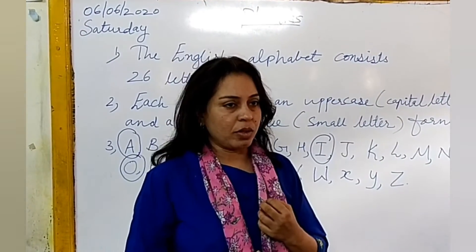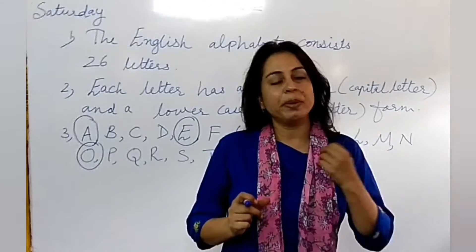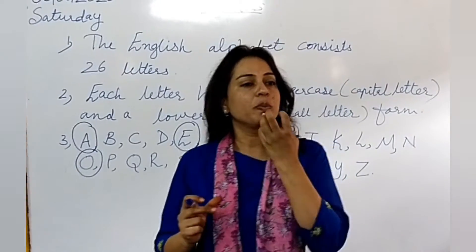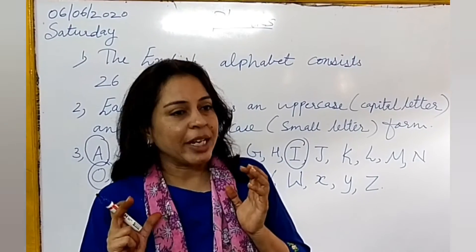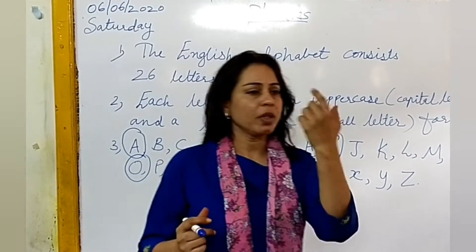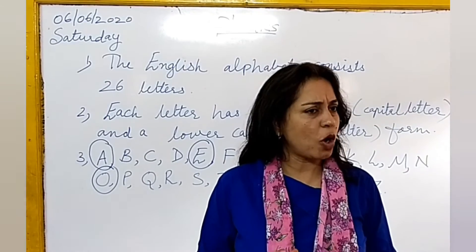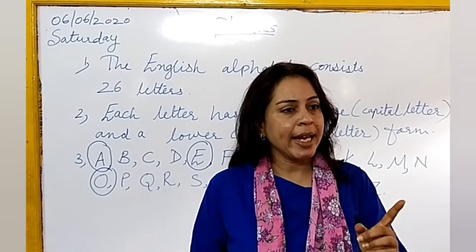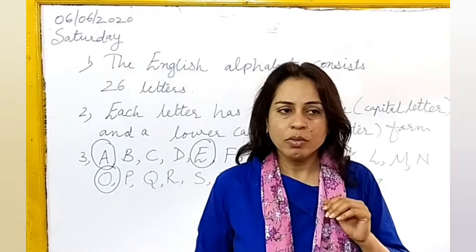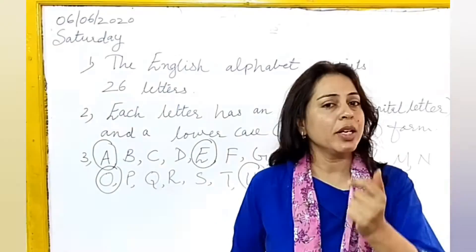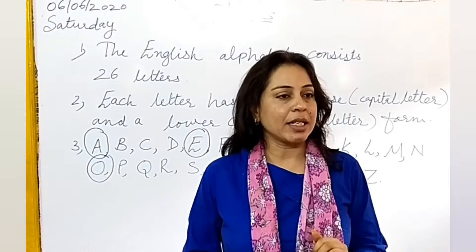We call them open vowels. Because when we repeat vowels, these sounds and our lip position, even tongue position change. Look at here. Look at my mouth cavity. A, E, I, O, U. These are 5 vowels. When you repeat these vowels, our lips and tongue cannot touch.